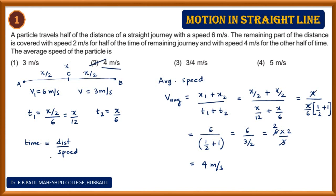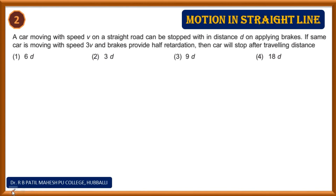Next problem: a car moving with speed v on a straight road can be stopped after distance d when the brake is applied. The same car is now moving with speed 3v, but the braking ability (retardation) has become half. We need to find the stopping distance. To solve this, we need the stopping distance formula.